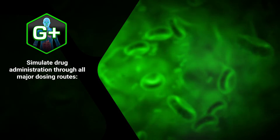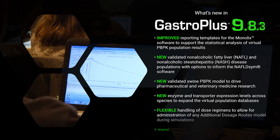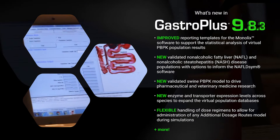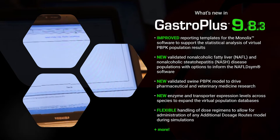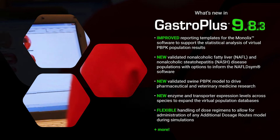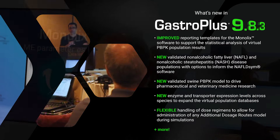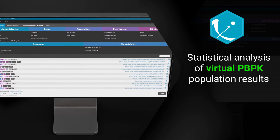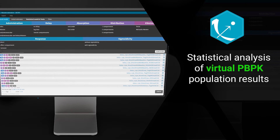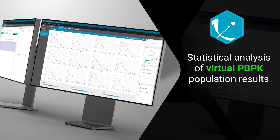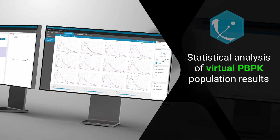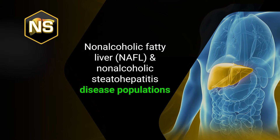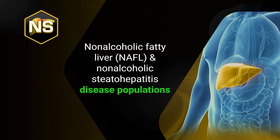So what's new in GastroPlus version 9.8.3? GastroPlus now has added ways to communicate with other software titles in the Simulations Plus universe, including improved synergies with Monolix to support the statistical analysis of virtual PBPK population results, and new validated non-alcoholic fatty liver and non-alcoholic steatohepatitis disease populations with options to inform the NAFLSTEM software platform.